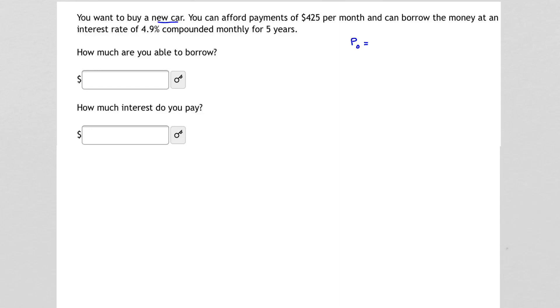That is, P0, or the amount of the loan, is equal to our monthly payments times the quantity of 1 minus quantity 1 plus R divided by K raised to the minus NK, all divided by R over K.